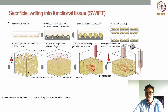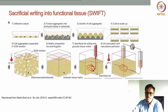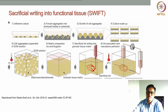After the printing process, the temperature was raised to 37°C. Two things happen: first, the Matrigel solidifies through self-assembly at 37°C; second, the gelatin liquefies at that temperature. The liquefied gelatin can be taken out, leaving behind open channels within the solidified tissue construct.